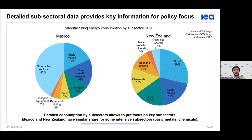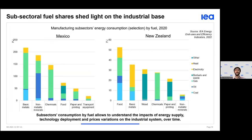Moving to industry, subsectoral data allows us to focus on key parts of manufacturing for each country. For New Zealand, the six most consuming subsectors account for about 95% of manufacturing consumption, while they cover just under 60% in Mexico. Splitting these six main subsectors by fuels, we can see general trends and country specificities: chemicals often depend on gas in both countries; wood and paper can depend heavily on biofuels and waste as seen in New Zealand; and basic metals depend a lot on electricity in New Zealand but much more on fossil fuels in Mexico.